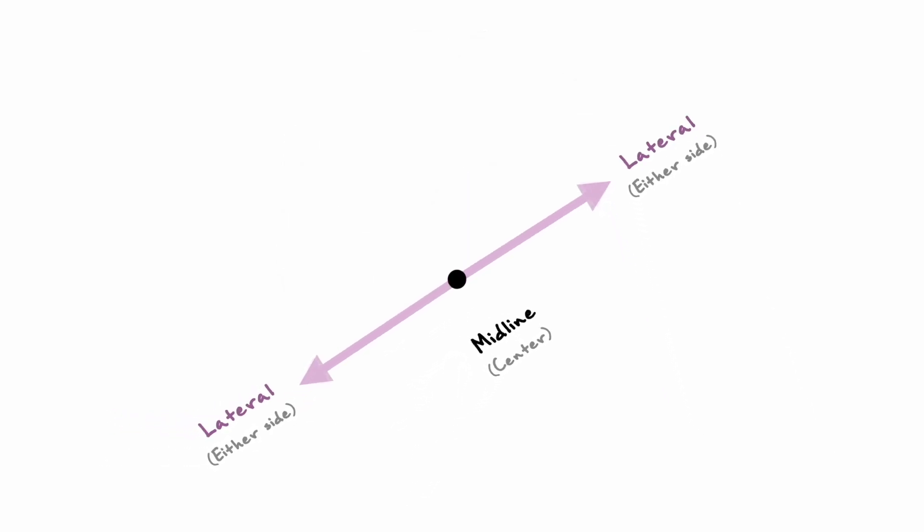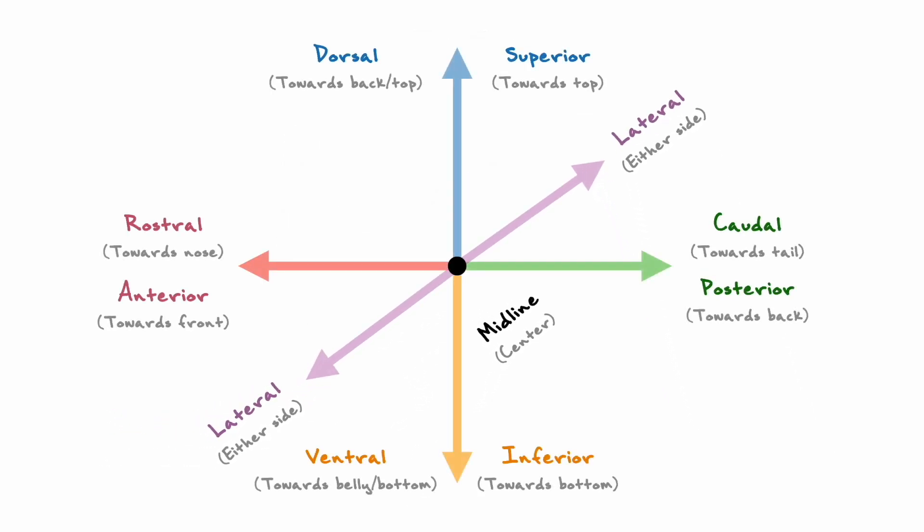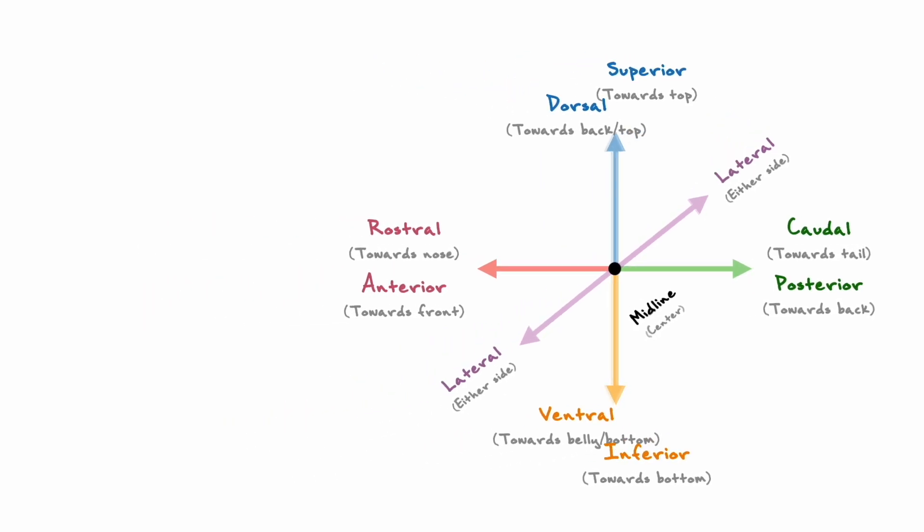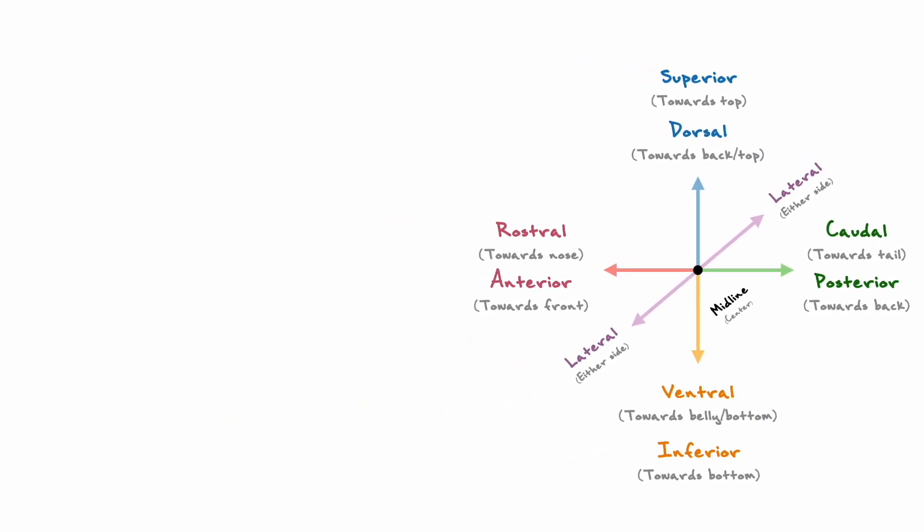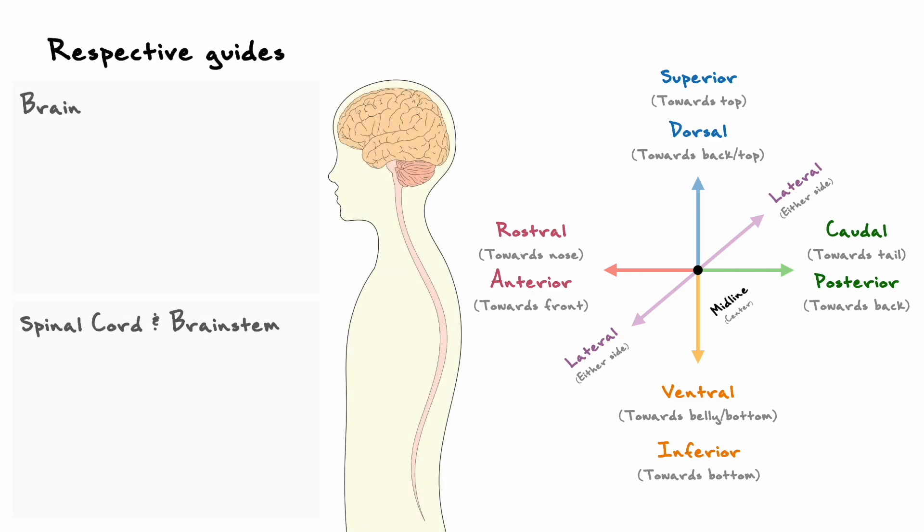In summary, we get this system to navigate the CNS. This summarizes pretty well what we have discussed, but there is an important detail that remains to be mentioned, and it concerns how this system is applied to the brain and the spinal cord respectively. So, as we mentioned for the brain, up is superior, back is posterior, down is inferior, and forward is anterior.